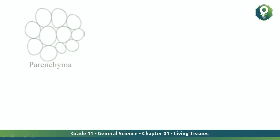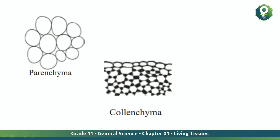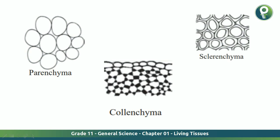Now, how does it look? Parenchyma looks exactly like that, collenchyma looks like this, and sclerenchyma looks exactly like this. You can pause the video and take a note. Look very carefully at how the cells are arranged in parenchyma, collenchyma, and sclerenchyma. In this lesson, we came to know about simple permanent tissue, and under it, there are three tissues: parenchyma, collenchyma, and sclerenchyma.